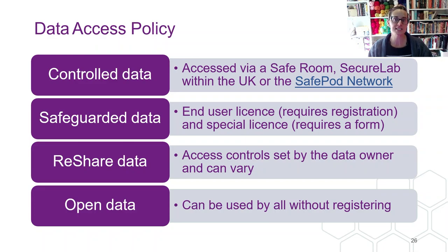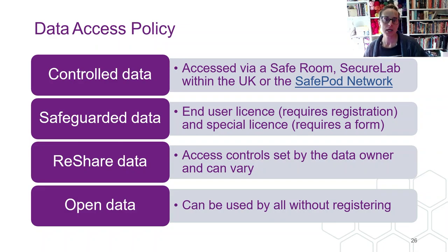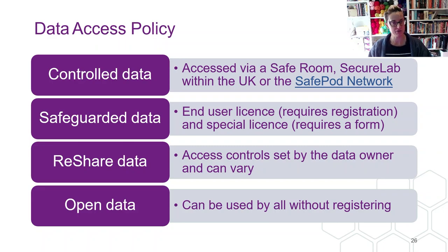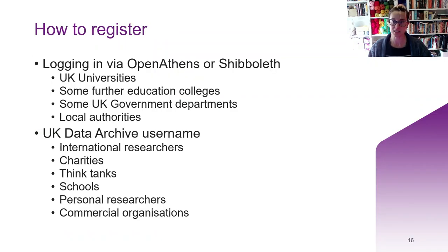Just a quick point on the different data access levels. Starting at the most restricted type, we have controlled data, also called secure access data, which can only be accessed through a safe room, secure lab, or within the UK safe pod network. Next, we have safeguarded data, available through the end user licence, which requires registration. Some of this is also special licence data with additional requirements. Then there's reshare data, self-deposited by data creators or owners, where access and controls can vary. Finally, the least restricted type is open data, accessible by anyone, even without registration. Importantly, most of the data in our collection can be accessed free of charge — you can simply register with your institutional login, or apply for a UKDA username if you don't have one.